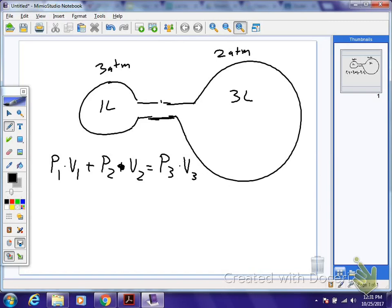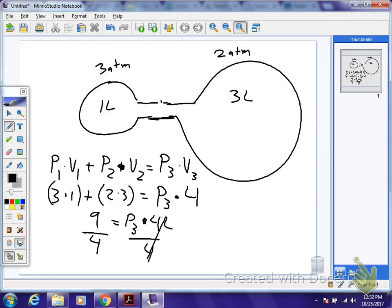So what we would do, on this example we take 3 times 1 plus 6, which would be 2 times 3. And then what you're going to end up with is P3 times, what's the new volume? 4, right? So basically, you have 3 plus 6 is 9, and then 9 equals P3 times 4 liters, and then you would divide by 4 both sides, and that gets you your P3, your final pressure. Does that make sense?